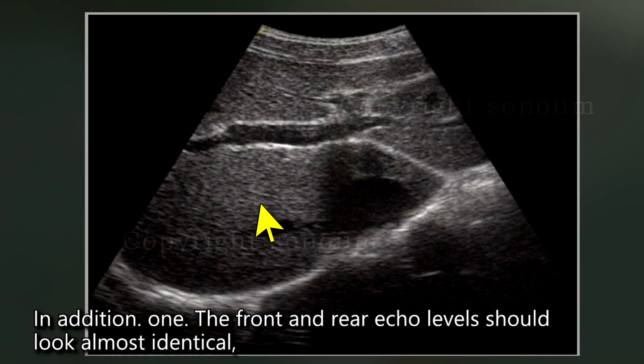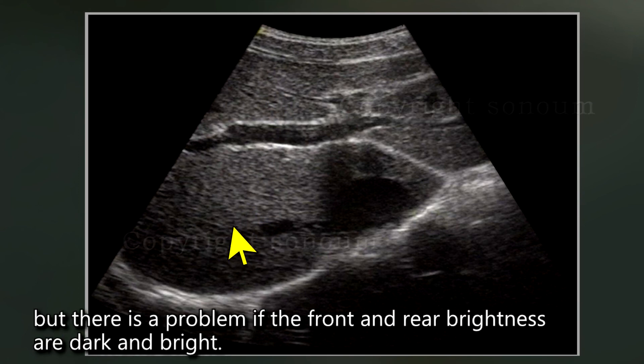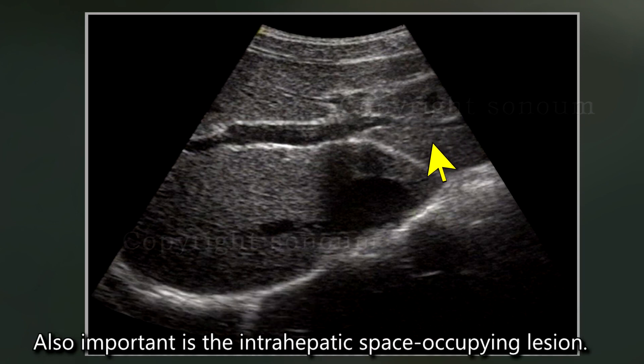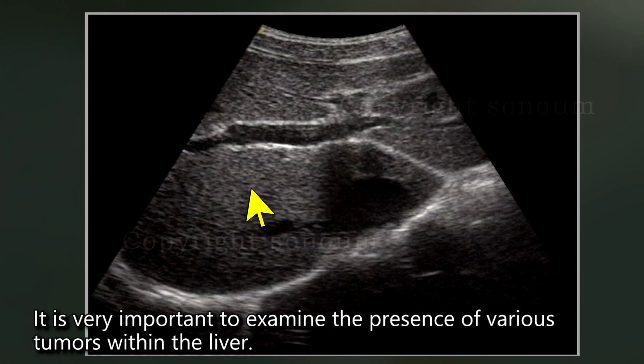In addition, the front and rear echo levels should look almost identical. But there is a problem if the front and rear brightness are dark and bright. Intrahepatic blood vessels should be visible as smooth lines and shades. But when it looks bumpy, it becomes a problem again. Also important is the intrahepatic space-occupying lesion. It is very important to examine the presence of various tumors within the liver.